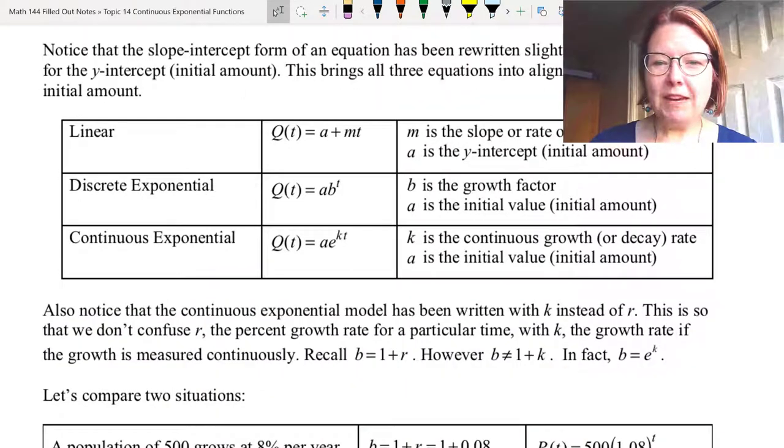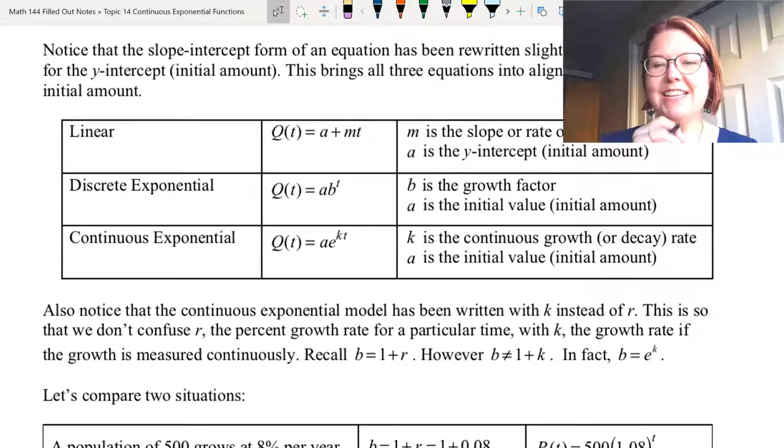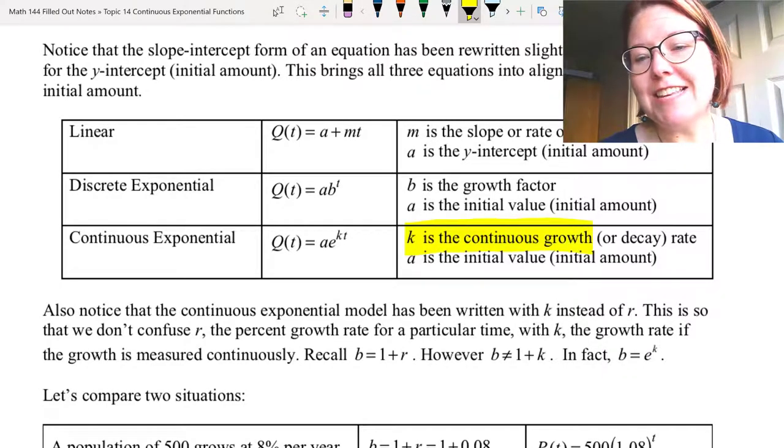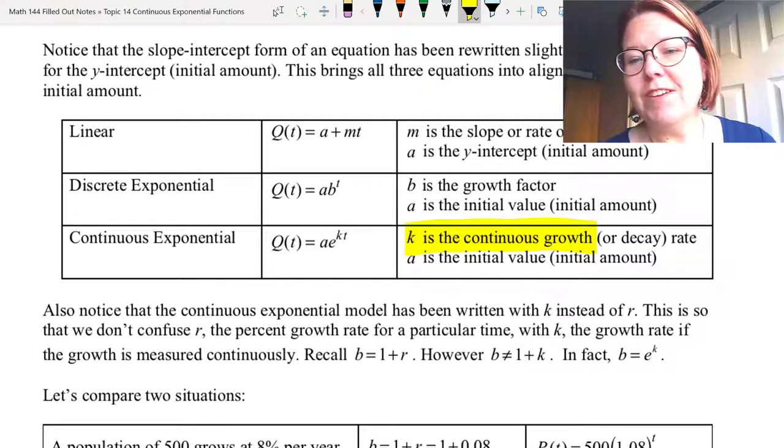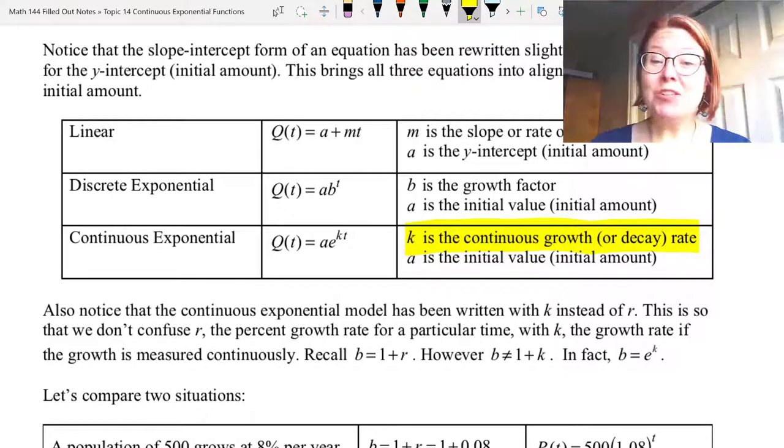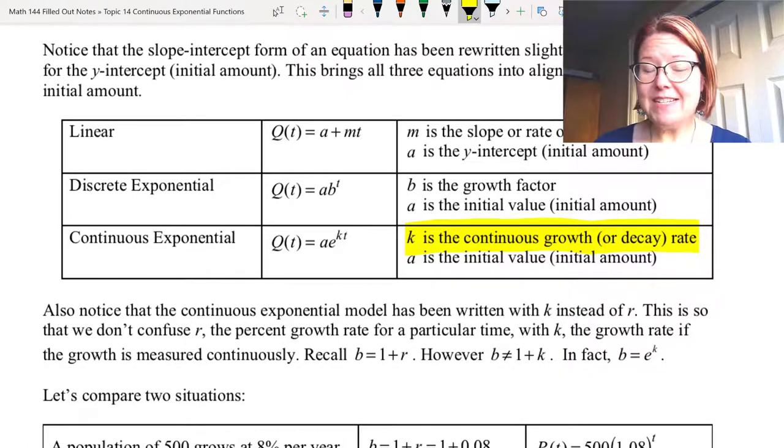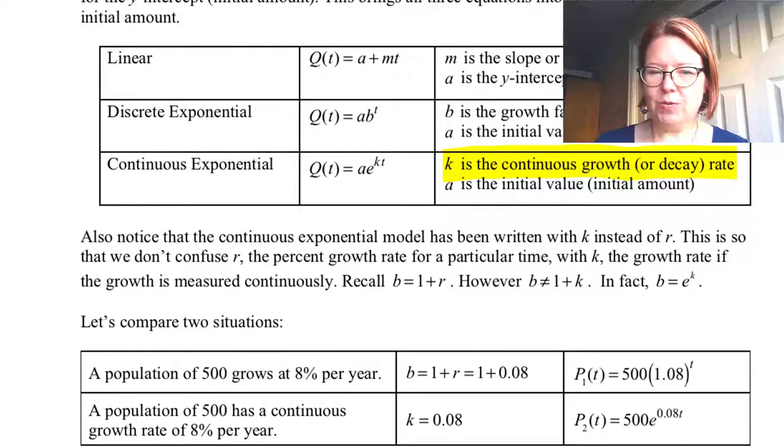I do want you to pay careful attention to the fact that in the continuous exponential model, we use k instead of r. k is a continuous growth rate. It is not the same thing as the r value. The base b in the discrete model is equal to one plus r. However, b is not equal to one plus k. In fact, b is actually equal to e to the k power.